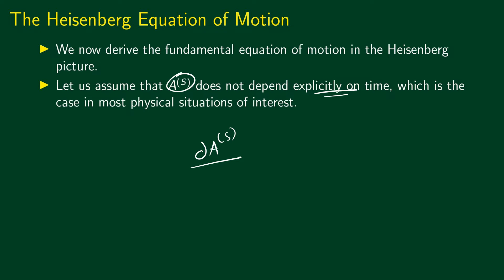This means that the partial derivative of the Schrödinger picture operator with respect to time can be taken as zero. But in the last class, we already said that the Schrödinger picture operator does not depend on time. Then why do we have to assume this again? The reason is that there can be situations where the Schrödinger picture operator depends explicitly on time. For example, we talked about the Hamiltonian operator corresponding to the interaction of the electron spin with an external magnetic field. If the external magnetic field changes with time, then the Hamiltonian also would change with time. This is an example of an explicit time dependence. So here we are assuming that the Schrödinger picture operators do not have such explicit time dependence, which is true for most physical situations of interest.